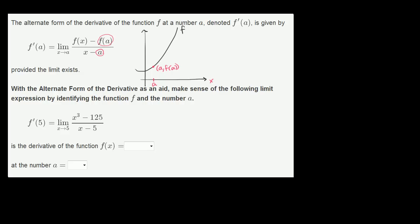And then we could take the slope between that and some arbitrary point. Let's call that x. So this is the point x, f of x.